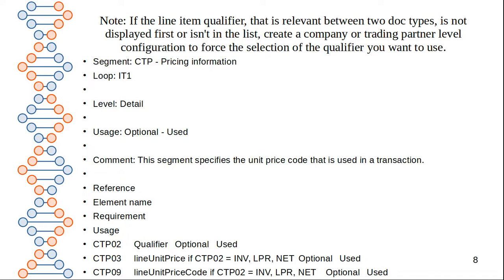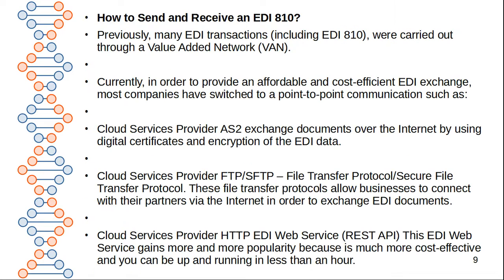Note: if the line item qualifier that is relevant between two document types is not displayed first, or is not in the list, you can create a company or trading partner level configuration for forcing and selecting the qualifier you want to use. The CTP segment covers pricing information. Loop type 31 loop detail information is used, as you can see on the screen. There might be some questions asked in an interview about this topic.